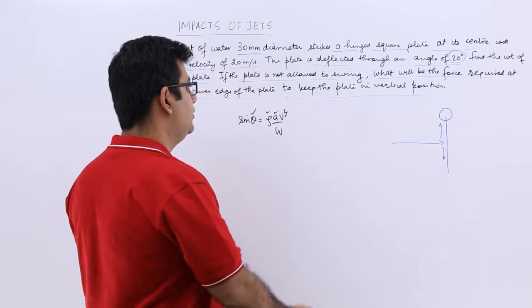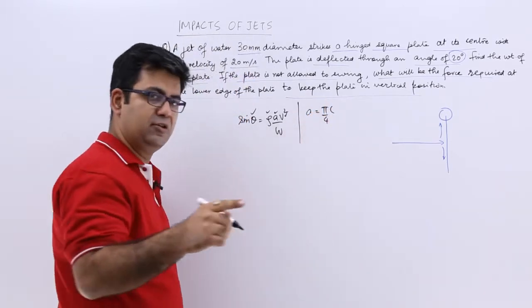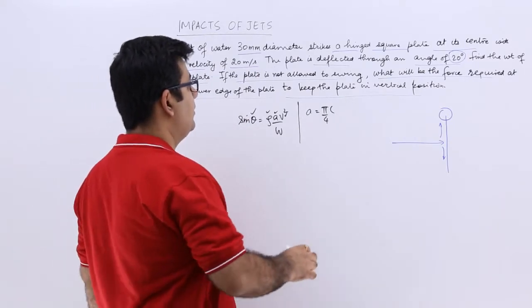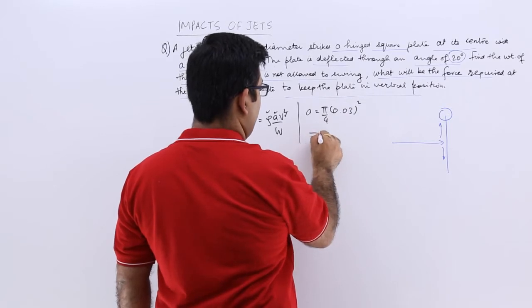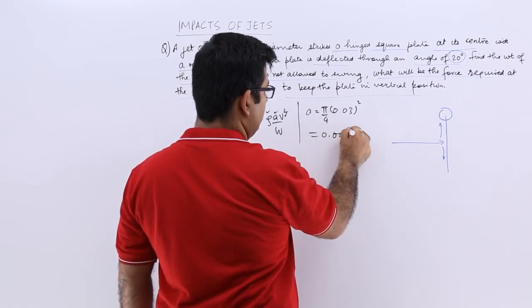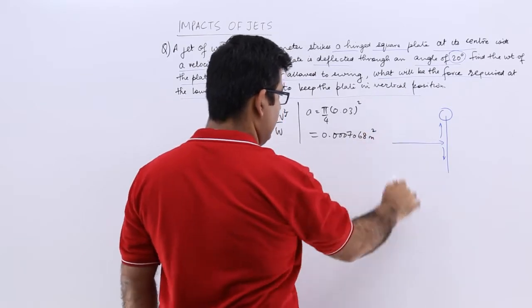Let's find out area. So area is pi by 4 into diameter squared. The diameter is 30 mm, which means 0.03 meters. So when you solve this you get 0.0007068 meter squared.